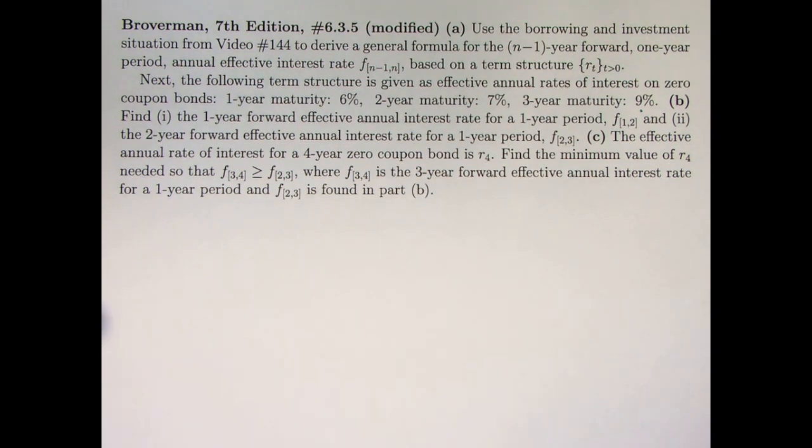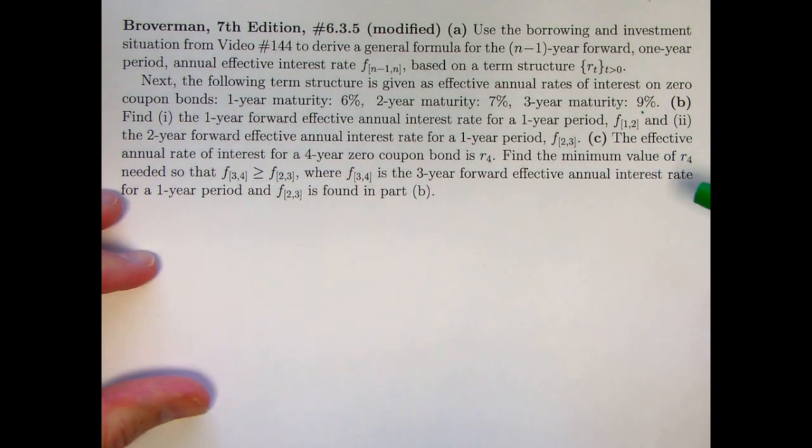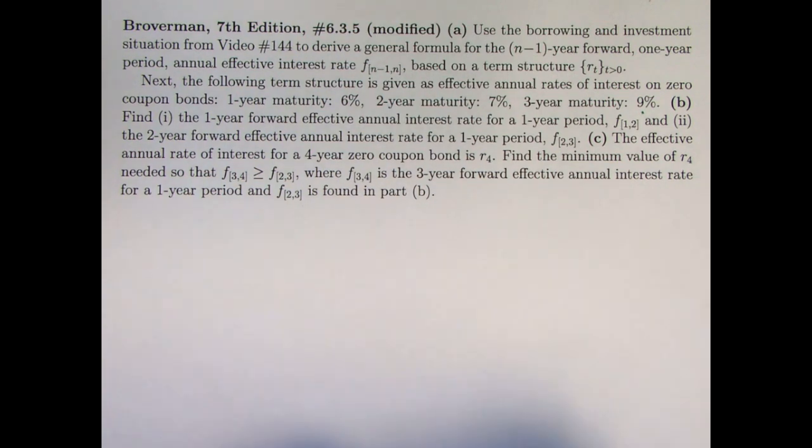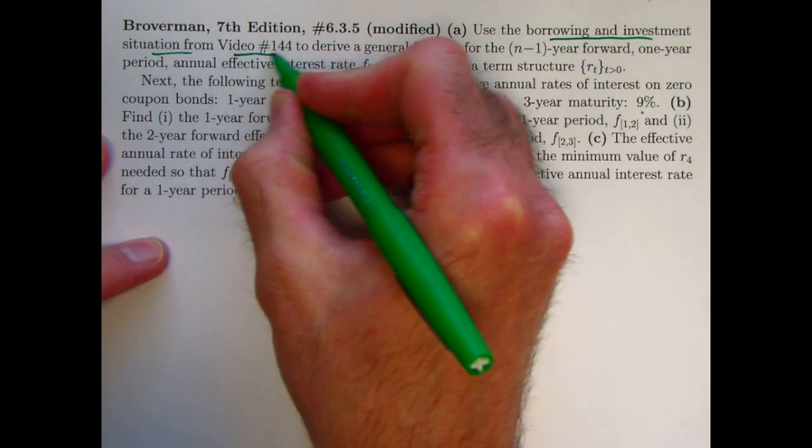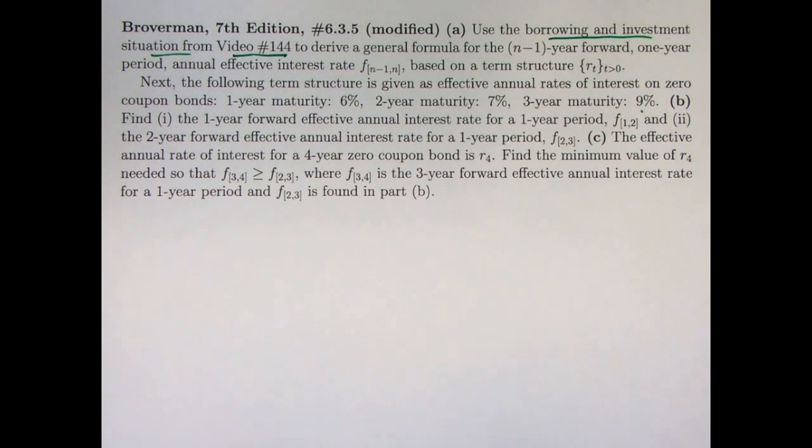The problem is kind of intimidating looking as you look through it, especially part A. And part A is the new part, the modified part. Parts B and C are what's actually in the book, and in the book they are labeled as parts A and B. Let's just take it step by step here. We're going to use the borrowing and investment situation that I described in the last video, 144. I'll put a link to video 144 up there on the video.